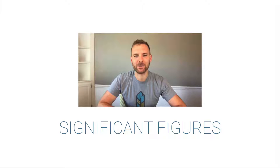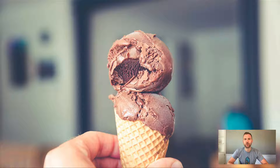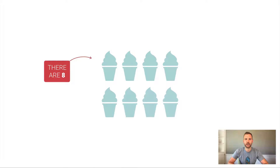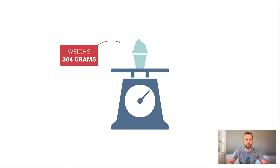In this video we're talking about significant figures, which are very important as we take measurements in chemistry. Looking at this picture of an ice cream cone, I notice there are two scoops of ice cream — that's exact, not a measurement. I can see them, I can count them. Things we can count are called exact numbers, not measurements. There are eight ice cream cones here, but if I got the mass or temperature of one, that would be a measurement.